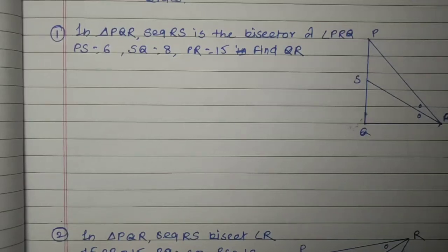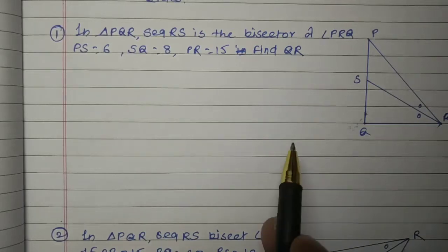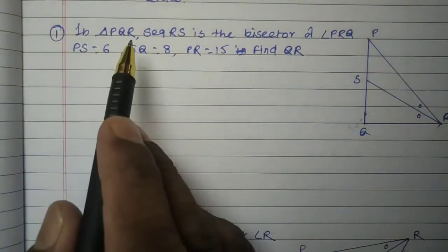Hello students, let's look at examples based on the angle bisector theorem of a triangle. Here are some examples.